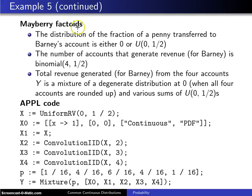So here are some Mayberry factoids. The distribution of the fraction of a penny that is transferred to Barney's account will either be a zero, and that occurs with probability one-half, or it will be a uniform random variable between zero and a half of a penny. In the case of Opie, the realization here was 0.318.